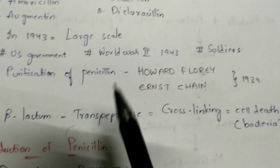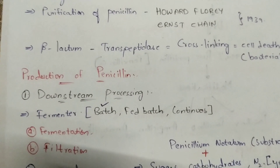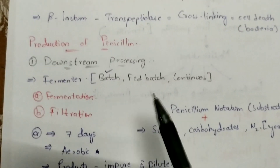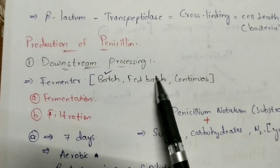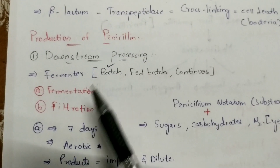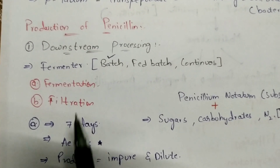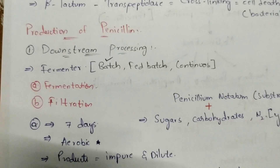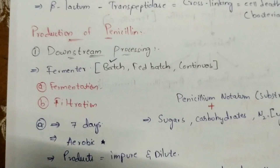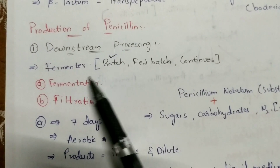For continuous production of penicillin, a continuous fermenter is used. The steps involved in downstream processing are fermentation and filtration. In the fermentation process, the substrates used are Penicillium notatum or Penicillium chrysogenum. Along with this substrate, you also add sugars, carbohydrates, and nitrogen. The nitrogen is not taken as a gas but is taken in the form of yeast, because yeast consists of a large amount of nitrogen.